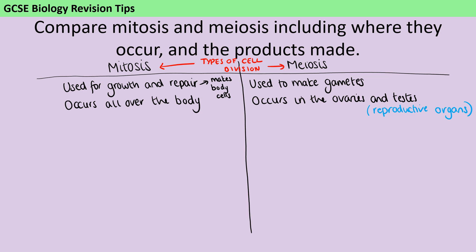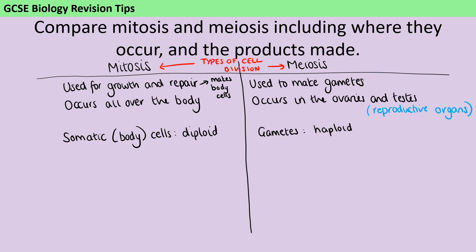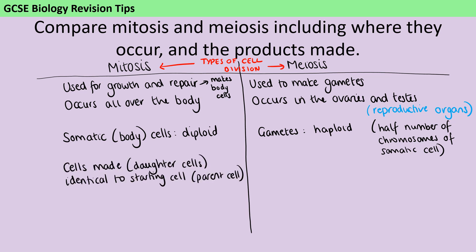Thinking about the products made: the somatic cells produced by mitosis are diploid, meaning they contain two copies of each chromosome, whereas the gametes produced by meiosis are haploid — they contain half the normal number of chromosomes, only one copy of each. The daughter cells in mitosis are identical to the parent cells, whereas in meiosis, since we've only got half the amount of DNA, the gametes are clearly not identical to the parent cells they were formed from.